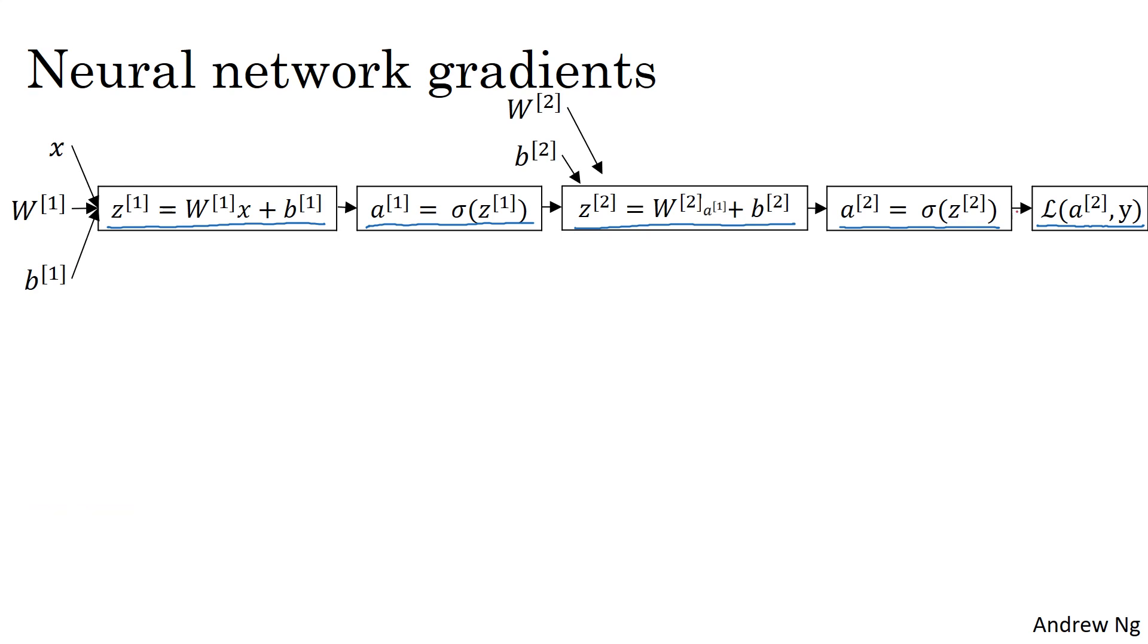What backpropagation does is it will go backward to compute da2, and then dz2, then go back to compute dw2 and db2, go back to compute da1, dz1, and so on.